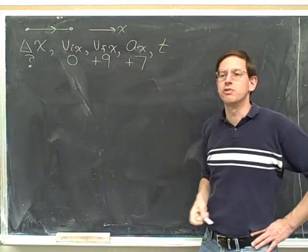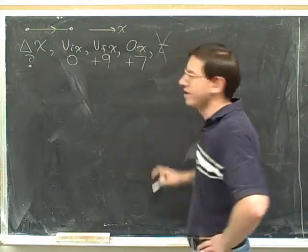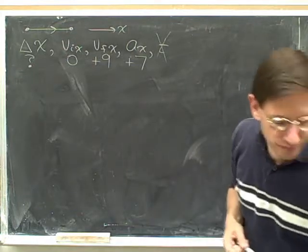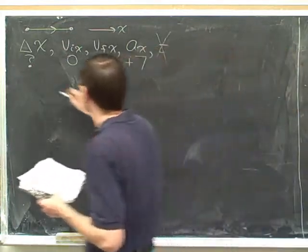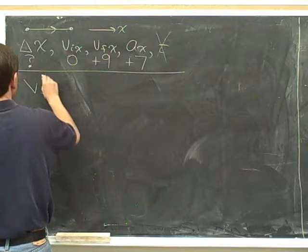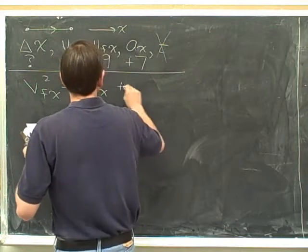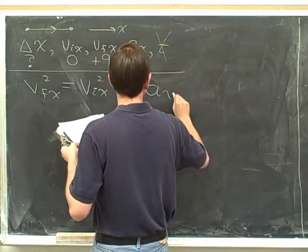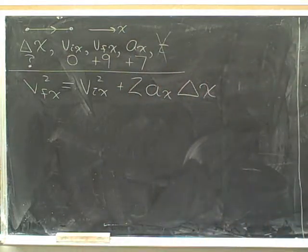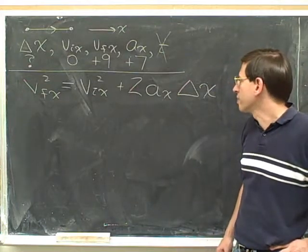Now that we have three numbers, we can pick out the right equation. What's the variable we don't care about? The variable we don't care about is time. So you should look at your list of equations and let's use the equation that does not include time. Well, obviously, this is the equation that does not include time. Now we plug in and solve.